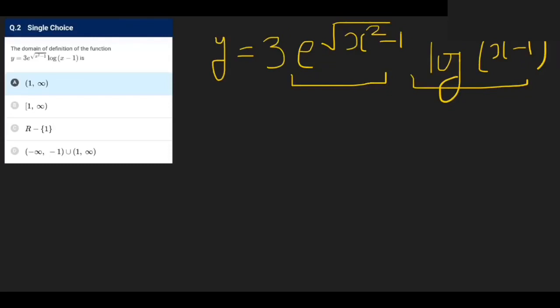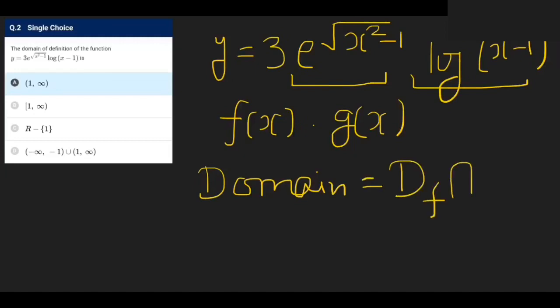Whenever there are two functions multiplied together, what is the domain? If you have a function f(x) and another function g(x), the domain is the intersection of the domain of f and the domain of g. So how to find the domain of these two functions? Let's see.